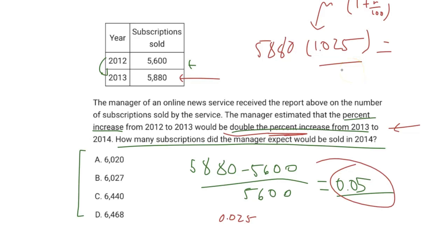So 5,880 times 1.025 is going to give us a value of 6,027, so that lines up with answer choice B as our final answer.